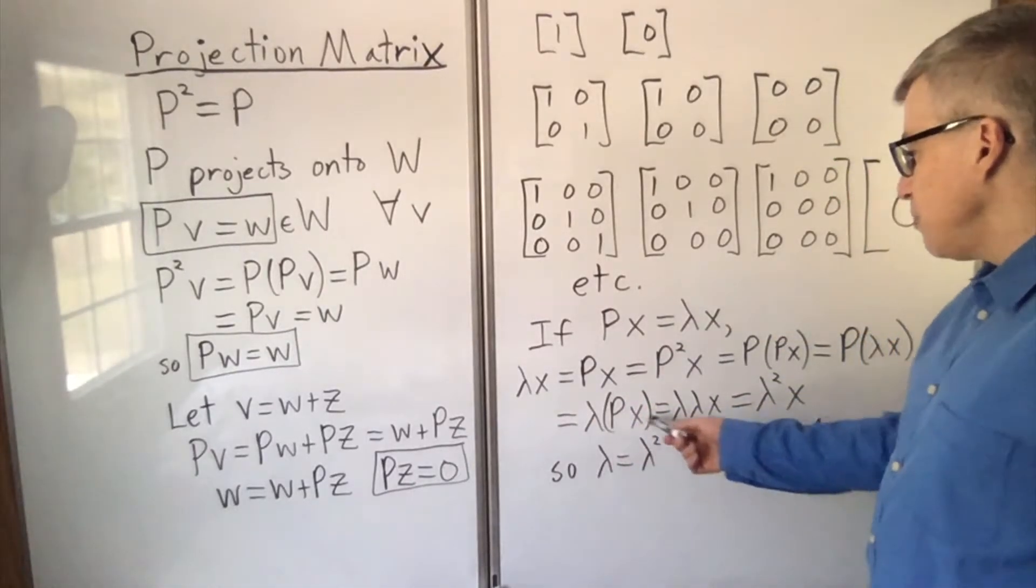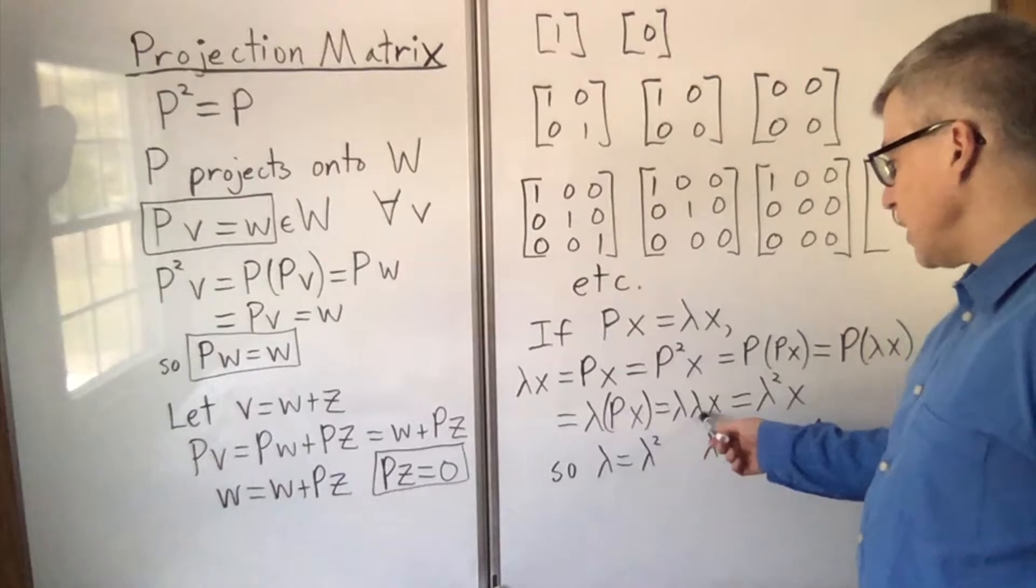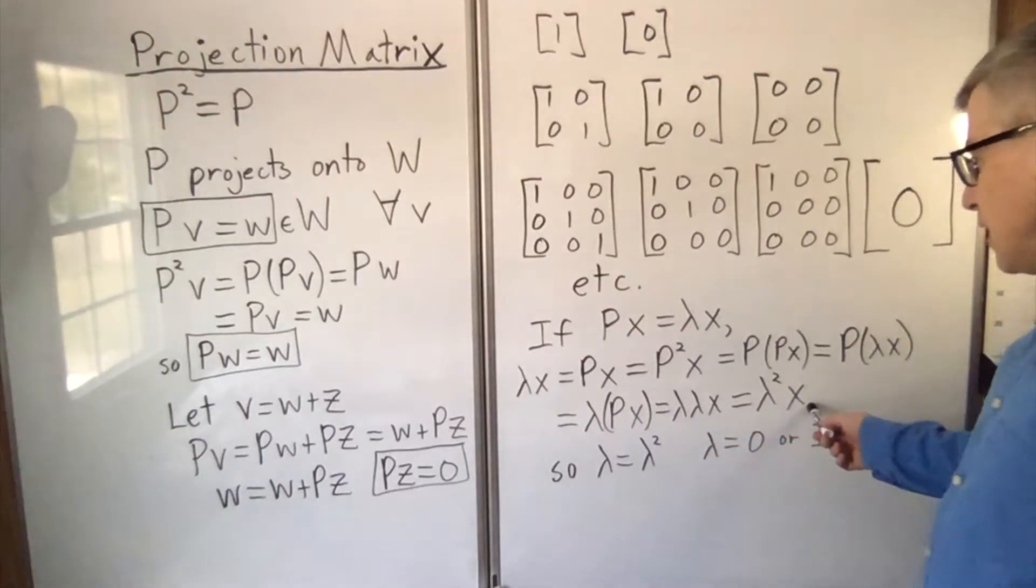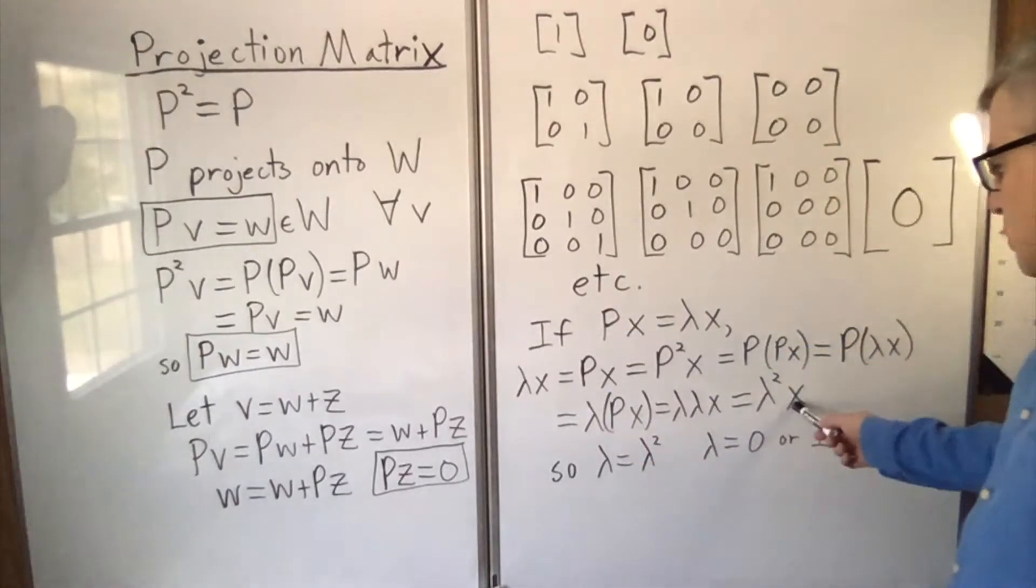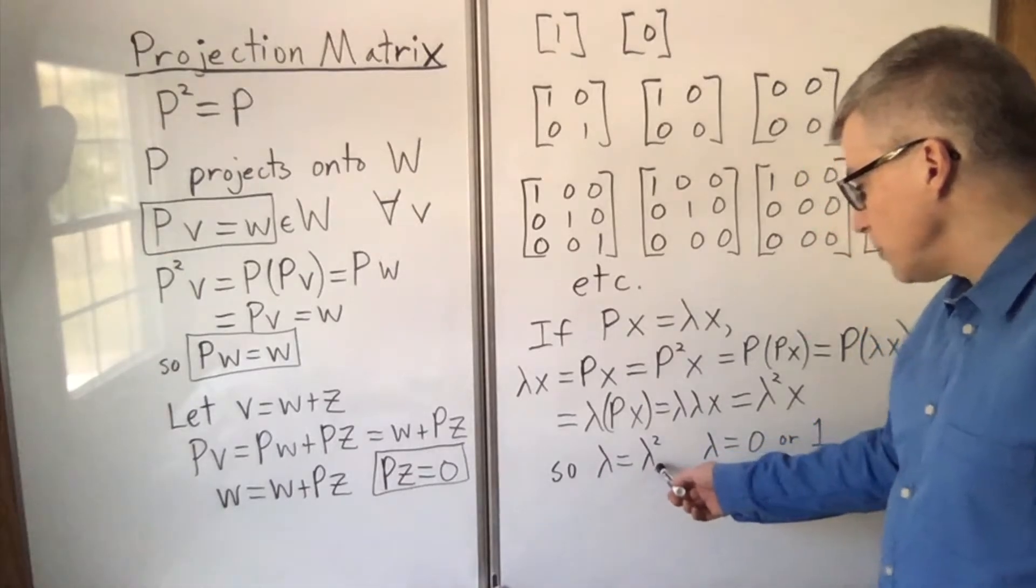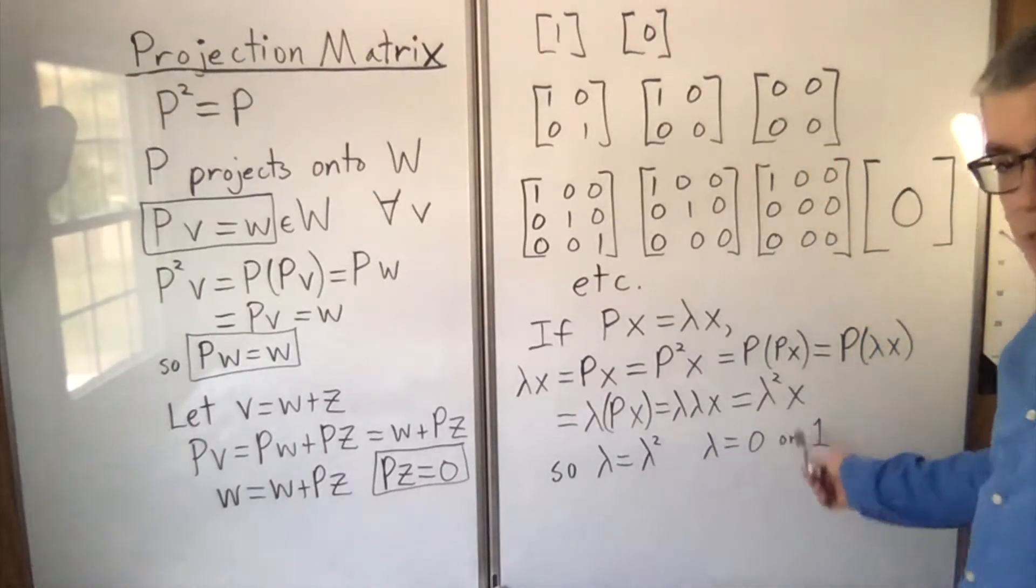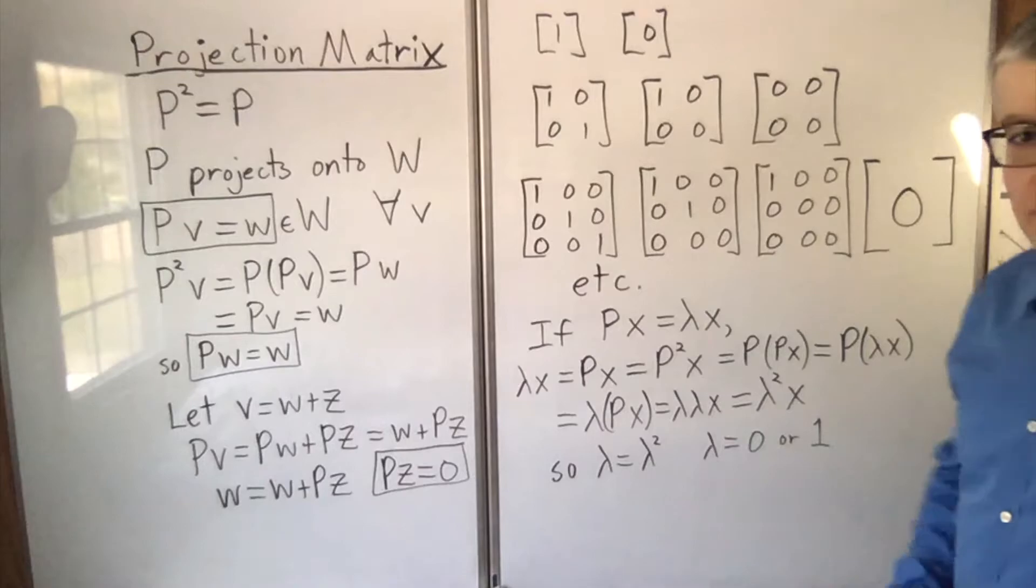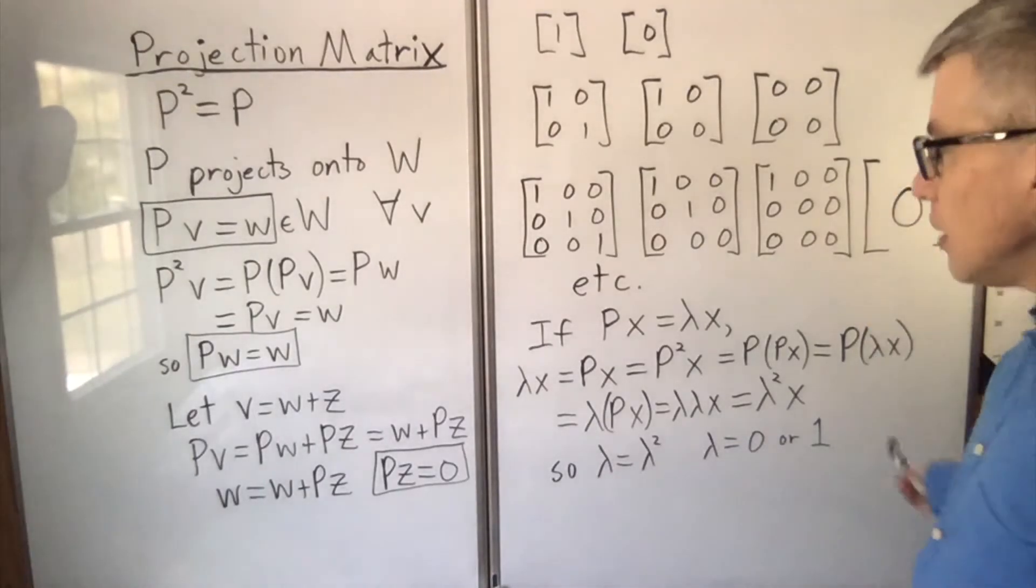And px is lambda x, so lambda lambda x, and lambda squared x. So lambda x is lambda squared x, so lambda equals lambda squared, which means lambda has to be 0 or 1. Those are the only eigenvalues of a projection matrix.